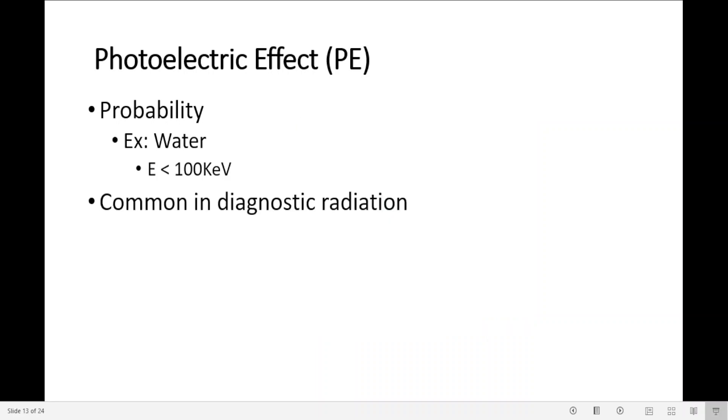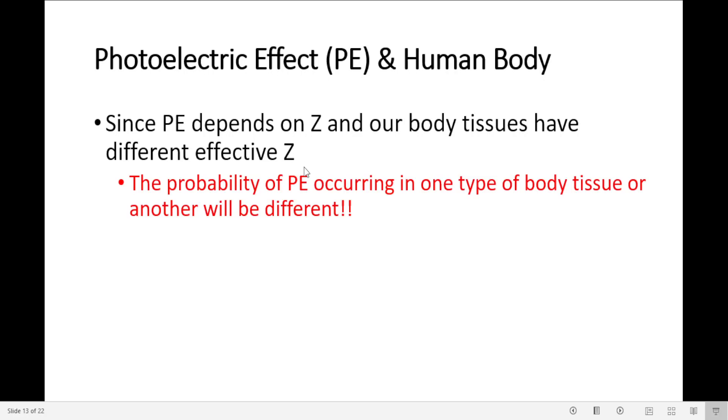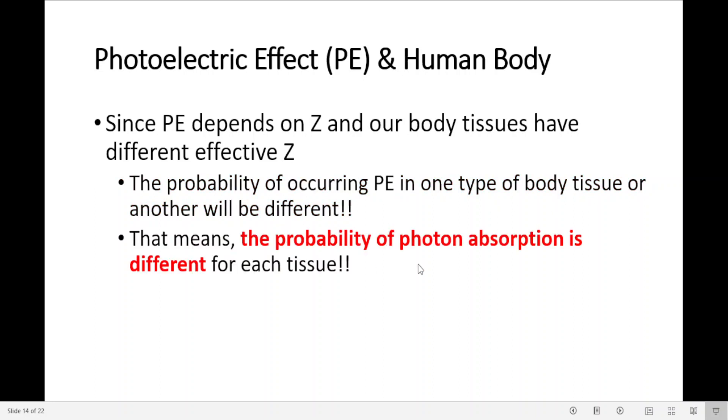In the energy range we work in diagnostic radiation, photoelectric effect is predominant. Since the photoelectric effect depends on the atomic number, and our body tissues have different effective atomic numbers, the probability of the photoelectric effect occurring in one type of body tissue or another will be different. That means the probability of photon absorption is different for each tissue.